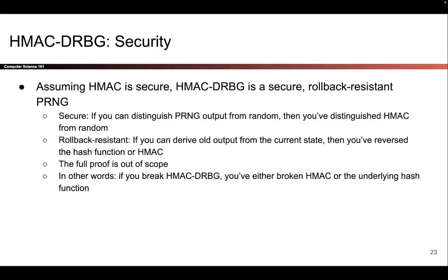Another great benefit of the HMAC-based PRNG is that it is rollback resistant. And remember, that property means you cannot run the HMAC-PRNG algorithm in reverse. Even if someone told you the current internal state, that is the values of k and v, those internal instance variables, you cannot run this algorithm in reverse to figure out the previous outputs of this PRNG.